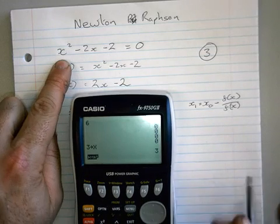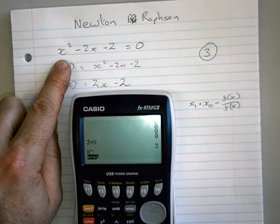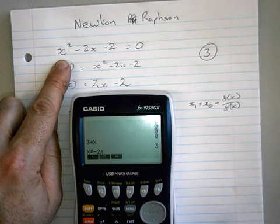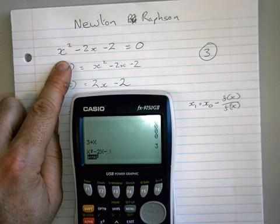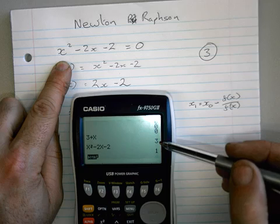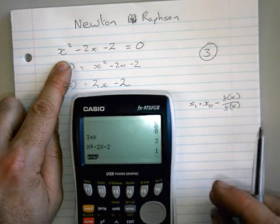Now what I'm going to do is I'm going to type in x squared. So x squared minus 2x minus 2 and just press equals. Because I've already told the calculator that x is 3, all I've got to do is type in x squared minus 2x minus 2 and it tells me the answer is 1.